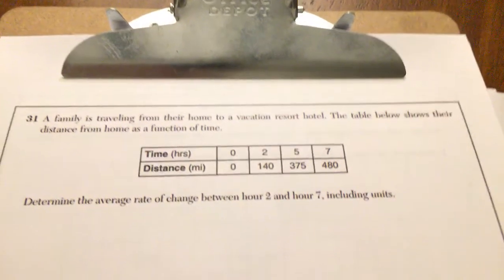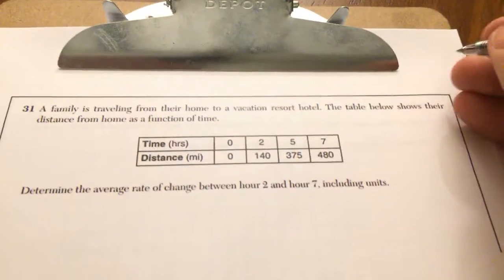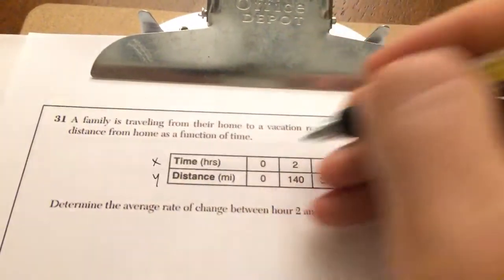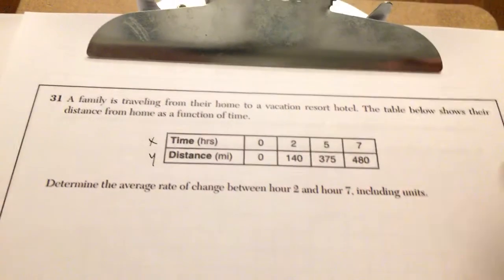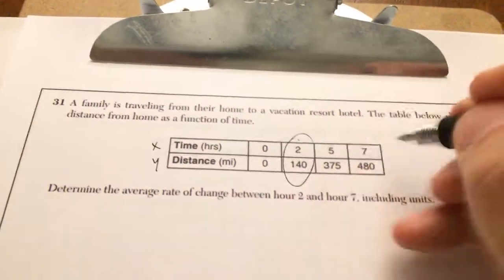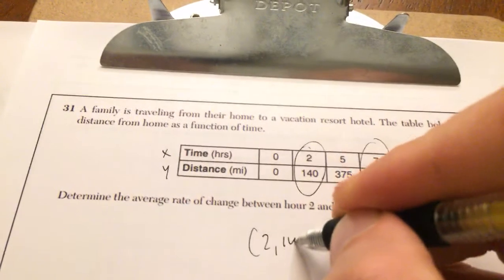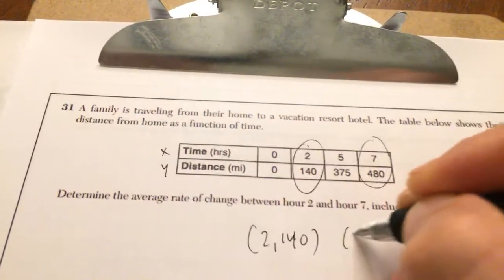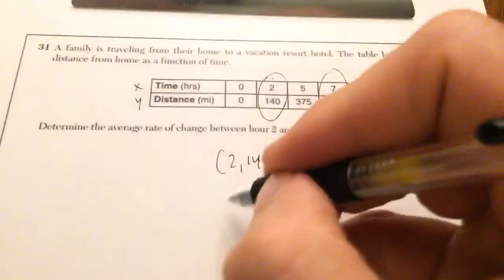Number 31 is asking for you to find the average rate of change between hour 2 and hour 7. You could pretend that this is your X and this is your Y for your distance. I'm just going to pair these two. I'm going to say 2, 140 and 7, 480. Remember the slope formula. I'm doing slope because the average rate of change means slope.